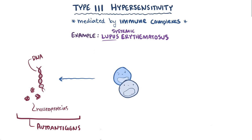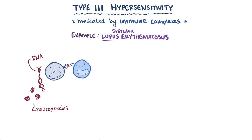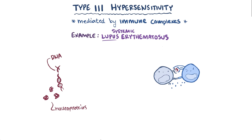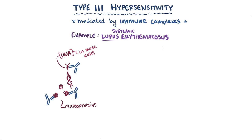With lupus, a DNA autoantigen might get released from a damaged cell, and a circulating self-reactive B cell might find it and bind to it. If a T helper cell that's also specific for the same DNA autoantigen is close by, it'll help activate the B cell and enable it to differentiate into an IgG-secreting machine specific to that DNA autoantigen. There might be lots of this DNA autoantigen around, since DNA is in most human cells, which allows a lot of IgG–DNA autoantigen complexes to form.